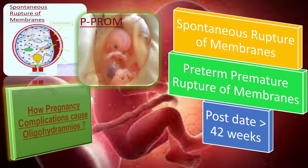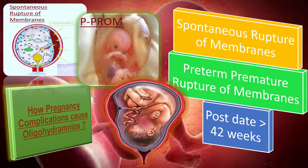Now, post-term pregnancy. There are several theories, but some theories state that in post-term pregnancies there is a redistribution of blood flow due to increased fetal weight, resulting in renal hypoperfusion and decreased urination that may cause oligohydramnios.